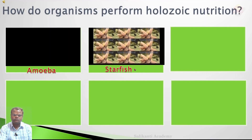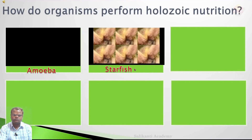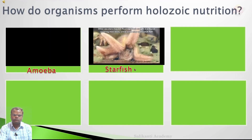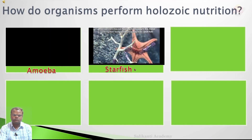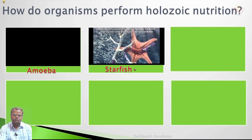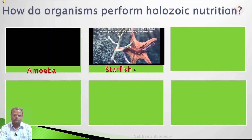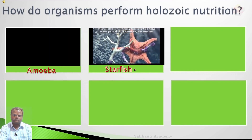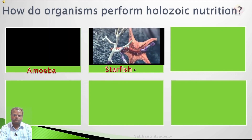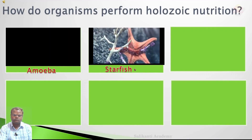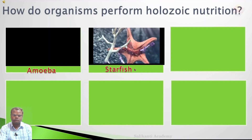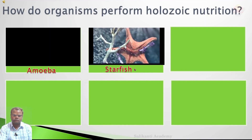Some starfish push their stomach outside of their body and engulf their prey with it. They then release digestive fluids that help break down the prey item until it is soft enough to be pulled back into their body along with the stomach.